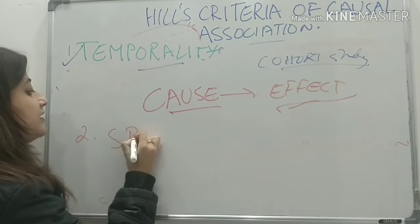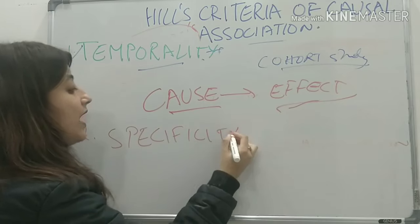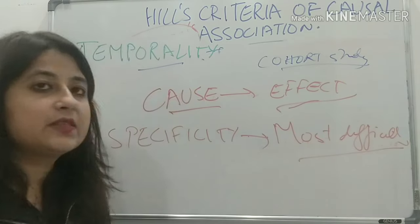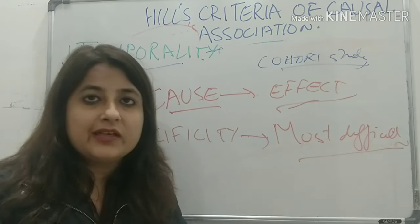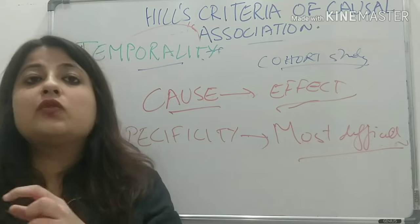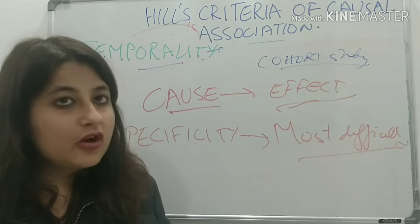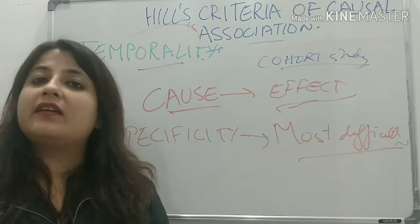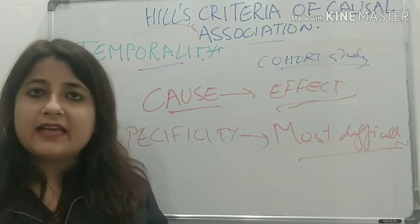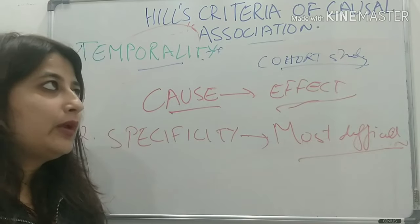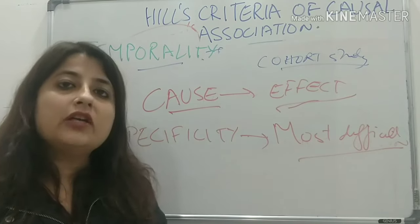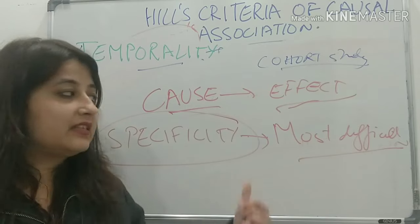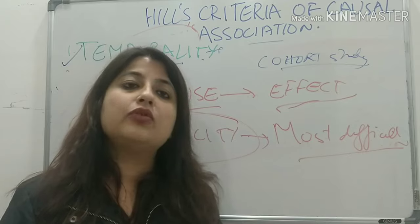The next criterion is specificity, which is the most difficult to establish. Specificity means a particular risk factor should be associated with just one disease — for example, smoking should only lead to lung cancer. But that is not the case: smoking is a risk factor for many other cancers like oral cancer, pancreatic cancer, and more. Therefore, specificity becomes the most difficult and least important criterion to establish.